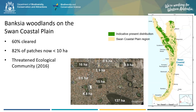But unfortunately, Banksia woodlands are in decline. It is estimated that 60% of the original Banksia woodland distribution has been cleared and the remaining woodlands are highly fragmented, with most patches now quite small. These factors along with other ongoing threats have resulted in Banksia woodlands being listed as a nationally threatened ecological community in 2016.